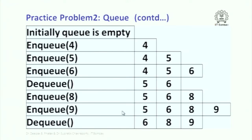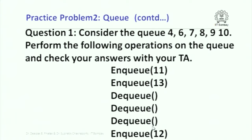Here are some examples. Initially the queue is empty. Mr. 4 joins — that is the first element. Mr. 5 joins — now elements are 4 and 5. 6 joins — added at the last element. If you say DQ, the zeroth element is removed and the queue becomes 5 and 6 only. Another 8 joins, then 9 joins. DQ operation removes the front again. Question 1: consider the queue 4, 6, 7, 8, 9, 10. Define an array initialized to these values — exactly the first 6 elements, indices 0 through 5. Then perform the operations: NQ 11, NQ 13, DQ, DQ, DQ, NQ 12.